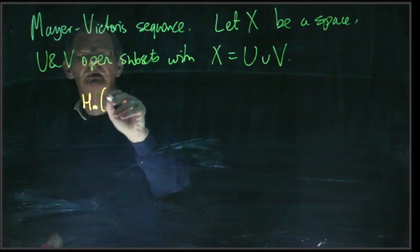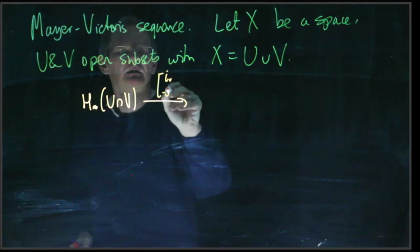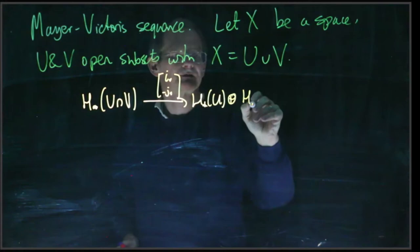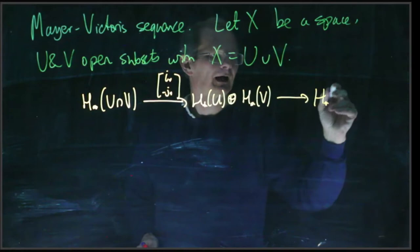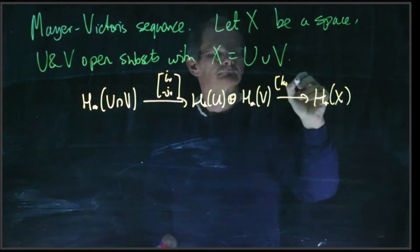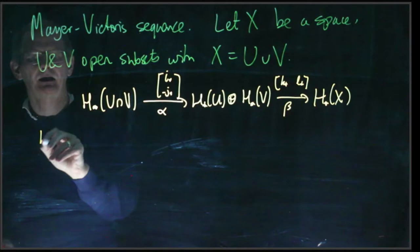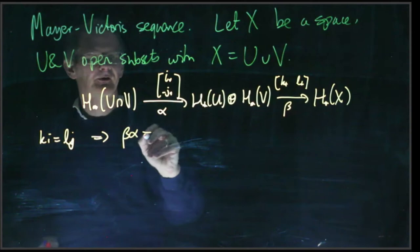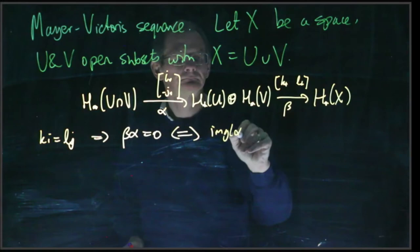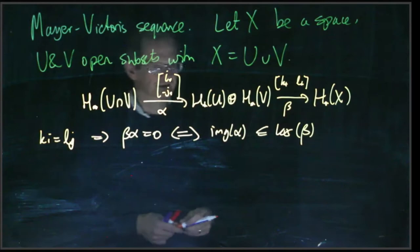We've got H star U intersect V mapping to H star U plus H star V, and then to H star X. Let's call this one alpha and this one beta. The fact that k i equals l j implies that beta alpha is zero, which is equivalent to saying that the image of alpha is contained in the kernel of beta, which is kind of half of the definition of exactness.